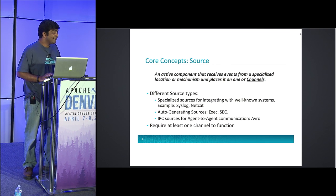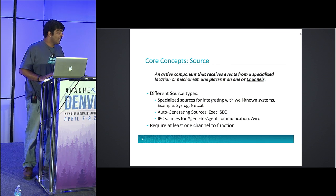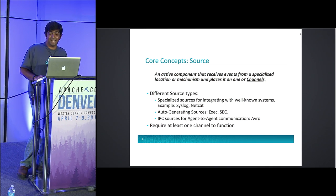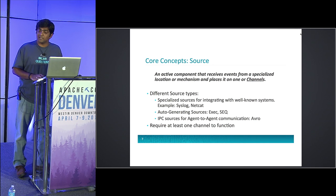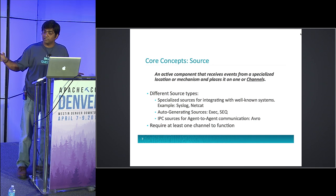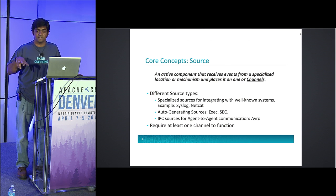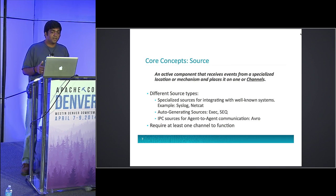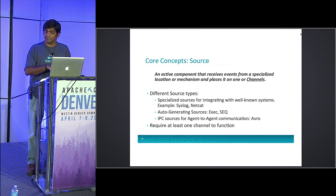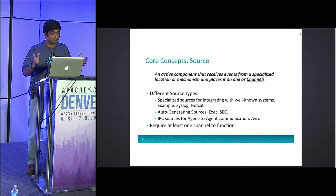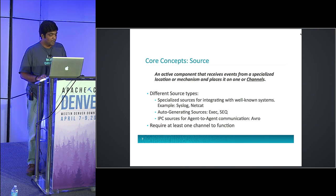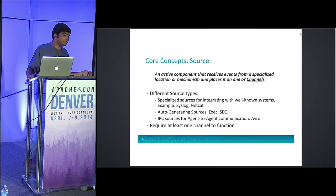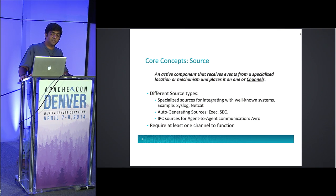There are some sources which automatically generate data, like an exec source. Exec source is one of the key sources many people use if they want to tail files. What exec source does is execute an external process and pull the output of that process into the Flume agent line by line. A sequence-generating source is what most people use to test anything other than the source — it generates a random sequence from one to n.